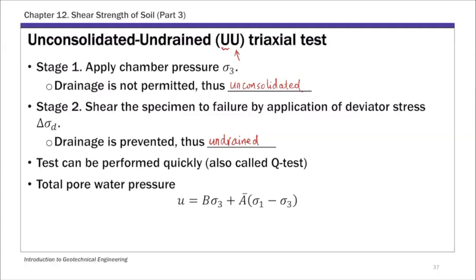The pore water pressure generated during this UU test consists of two components. The first one is B times σ3, which corresponds to the excess pore water pressure generated during stage one when we apply the confining pressure σ3 — this is what we define as Uc. The second component is Ā times the deviator stress, which is what we define as ΔUd — the excess pore water pressure generated during stage two when you shear the specimen to failure. B and Ā are Skempton's pore water pressure parameters.